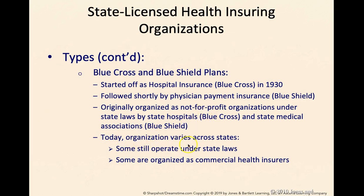Today the organization can differ across states. Some still operate under state laws; some are organized almost like commercial health insurers. They are named by state — Blue Cross and Blue Shield of New York, Blue Cross and Blue Shield of New Jersey, Blue Cross Blue Shield of Connecticut — so they are basically organized and regulated state by state.